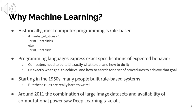When we do speech recognition, we use machine learning. Historically, most computer programming has been rule-based — you write rules like: if the number of slides is higher than one, write 'slides', otherwise write 'slide'. Programming languages historically expressed exact specifications of what needs to happen. You tell the computer exactly what to do and how to do it, which is natural for domains like database management systems. However, for language technology purposes, rule-based approaches aren't quite as useful. Starting in the 1950s, people were building rule-based systems for basic language tasks like translation, but those rules are actually really hard to write.